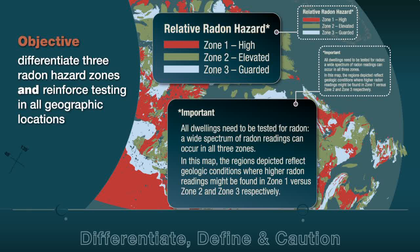Next, we matched the zones with a corresponding human alert level: guarded, elevated, and high. And finally, we reinforced the need to test, regardless of geographical region or zone.